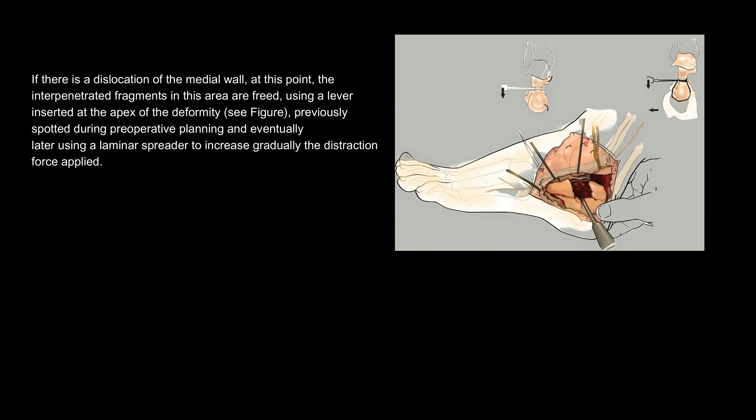If there is a dislocation of the medial wall, the interpenetrated fragments in this area are freed using a lever inserted at the apex of the deformity — previously spotted during preoperative planning — and eventually a laminar spreader is used to gradually increase the distraction force applied.